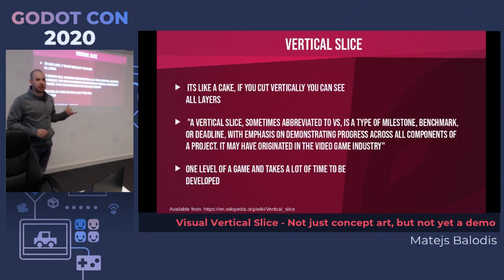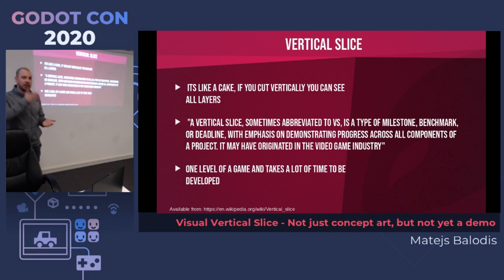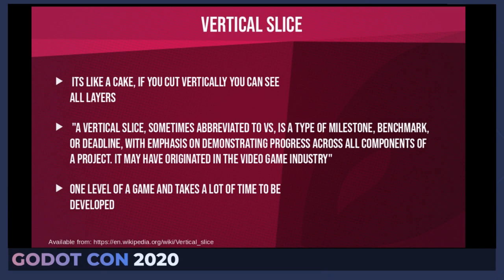Coming back to vertical slice — a cool analogy someone in the chat wrote was that it's like a cake: you can cut it vertically and see all the layers. As I said, it could be one level, and that's your vertical slice — it's gameplay that people can experience. But we cannot create gameplay at the moment, and we also don't want to sit on our hands. We want to keep working on the project and developing it.